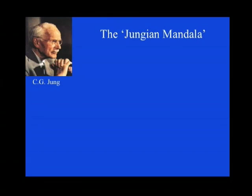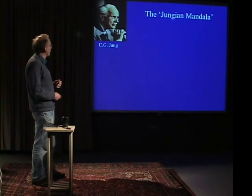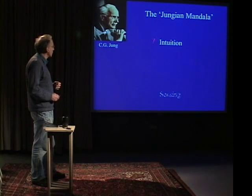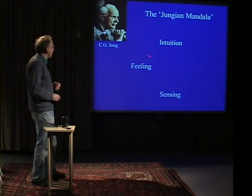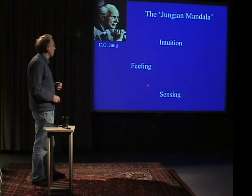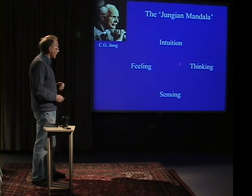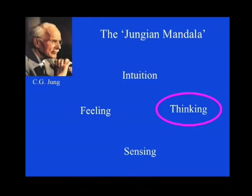It's my contention that as the ecological crisis has deepened, anima mundi is trying to get through to us through what Jung called our four ways of knowing: intuition, our sensory experience of the world, our ethical feelings about the world, and finally our rationality — our thinking about the world.